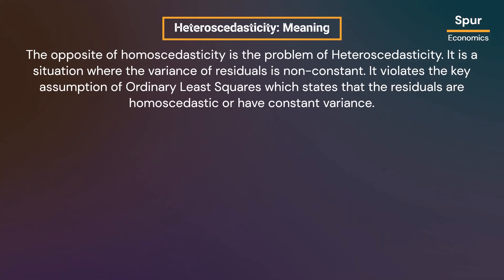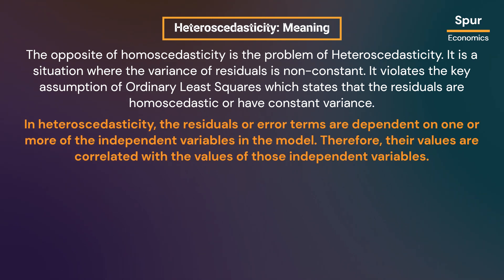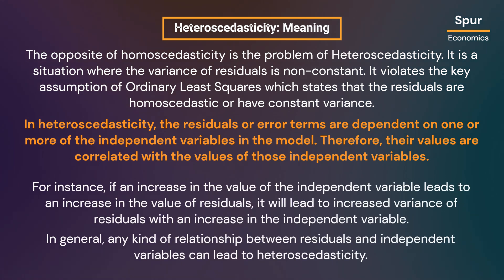The opposite of homoscedasticity is the problem of heteroscedasticity — a situation where the variance of residuals is non-constant. It violates the key OLS assumption that residuals are homoscedastic. In heteroscedasticity, the residuals or error terms are dependent on one or more of the independent variables, so their values are correlated with those variables. For instance, if an increase in the independent variable leads to an increase in residuals, this results in increased variance of residuals.